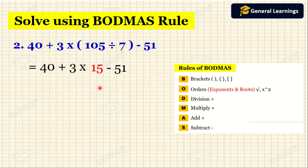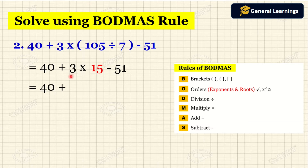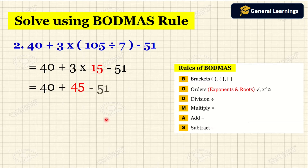Now the operations we have are plus, multiplication, and minus. According to the rules, first we need to do multiplication. So we write 40 plus as it is, then simplify 3 into 15, which gives the answer as 45. Then we write minus 51 as it is.